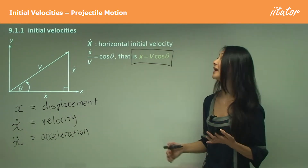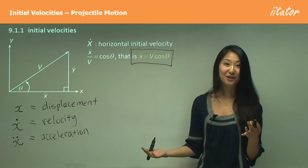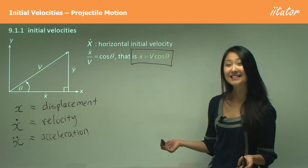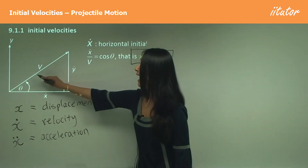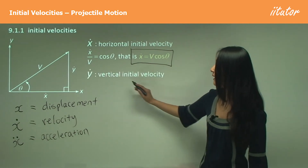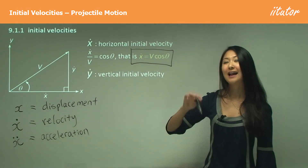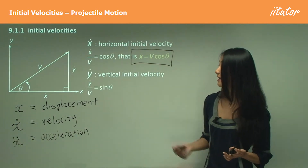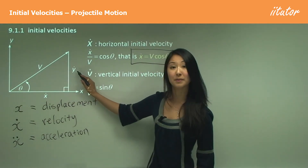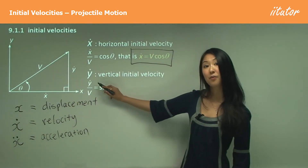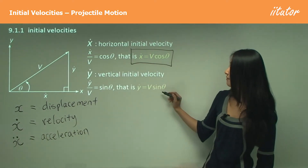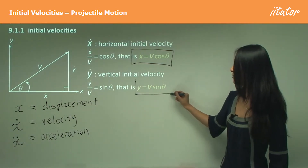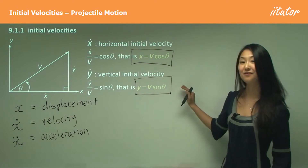Now how do we work out the vertical velocity? It's pretty similar. We again use the projectile angle and the initial velocity. We want to find the vertical component, and instead of cos theta we use sine theta because sine theta gives opposite over hypotenuse — y-dot over v — and multiplying v across gives us that the initial vertical velocity equals v times sine theta.